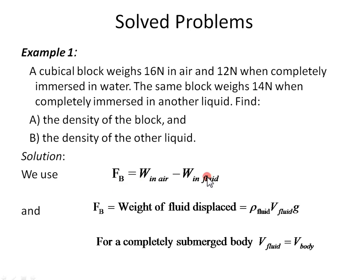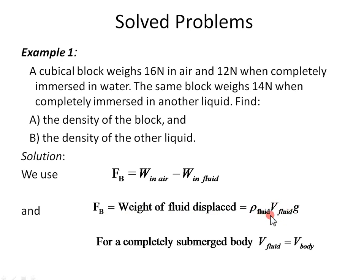When an object is immersed in a fluid, it experiences an upward force, or buoyant force, which is equal to the difference between the weight in air and weight in the fluid. And according to Archimedes' Principle, the buoyant force is expressed as weight of the fluid displaced: density of the fluid times volume of the fluid times G. Density times volume is mass of the fluid. And for a completely submerged body, we use the volume of the fluid to be equal to the volume of the body itself.